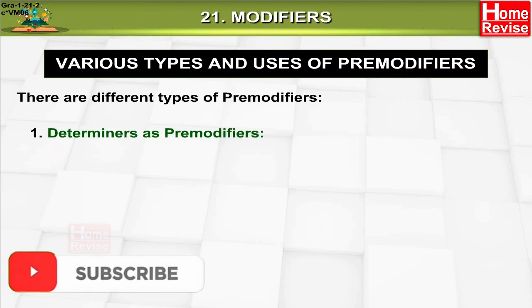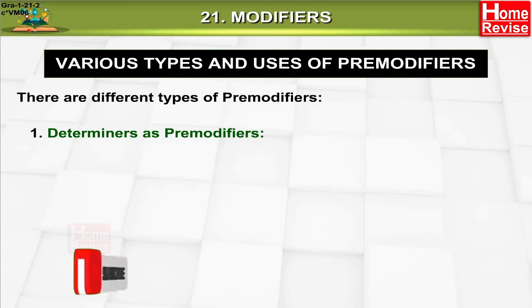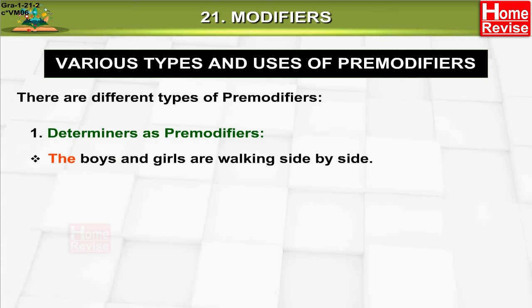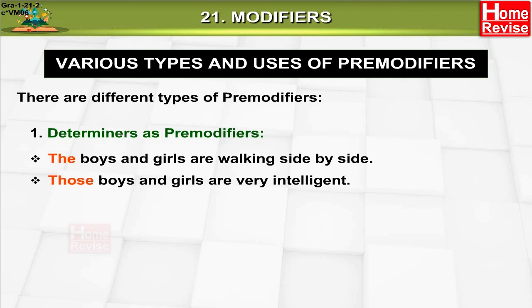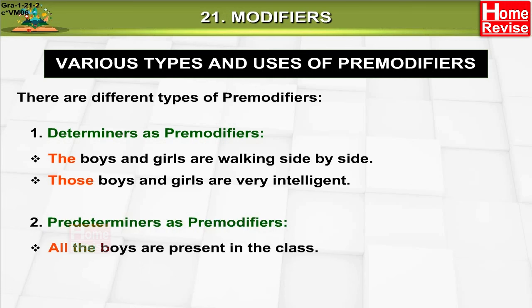One: determiners as pre-modifiers. Example: 'The boys and girls are walking side by side.' 'Those boys and girls are very intelligent.' Two: predeterminers as pre-modifiers. Example: 'All the boys are present in the class.' 'Both the books are out of print.'